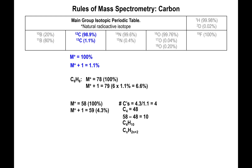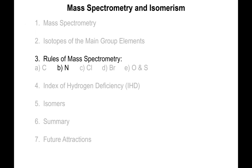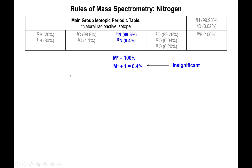The M+1 peak is the one that gives you the carbon content. Simply divide the percentage by 1.1 and that gives you the number of carbons in your molecule.